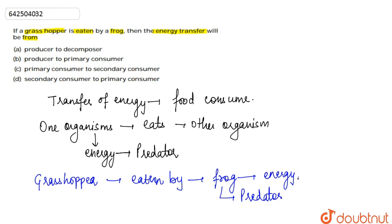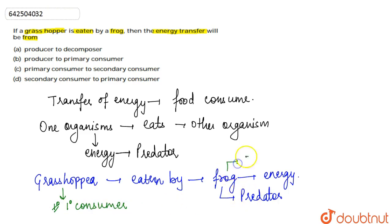The flow of energy will occur from the grasshopper to the frog. If we consider the trophic levels, the grasshopper is the primary consumer — it is a herbivore. The frog is going to be the secondary consumer; it is a carnivore or we can say an omnivore. So the flow of energy is taking place from the primary consumer to the secondary consumer.